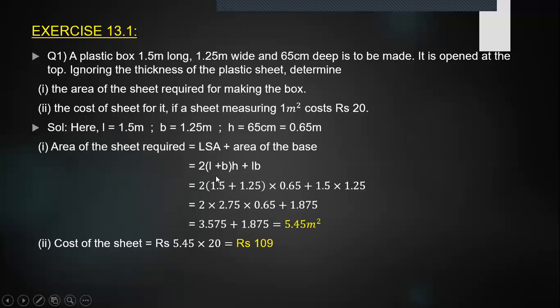So what is the area of the sheet required? That's going to be the lateral surface area plus the area of the base. The top surface is not included. So lateral surface area is 2(l + b)h + lb. You need to be very careful with multiplication and addition over here, especially because the working is involving decimals. So you get the area of the sheet as 5.45 meters square. So the cost of the sheet, you will multiply the area obtained with 20 and you get the cost as Rs 109.